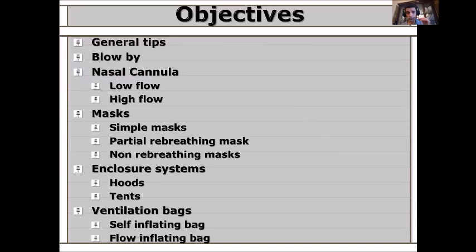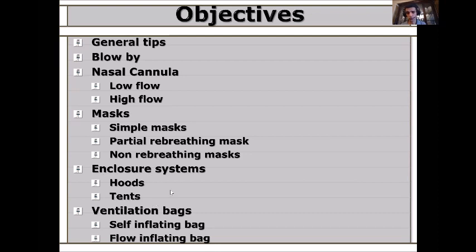The objectives today include general tips, then blow-by oxygen, nasal cannula for both high and low flow, micro flow, different types of masks including simple mask and its types — Venturi and non-Venturi — partial and non-rebreathing masks, enclosure systems like hoods and tents, and finally ventilation bags such as self-inflation and flow inflation bags. The talk should take about 30 minutes.